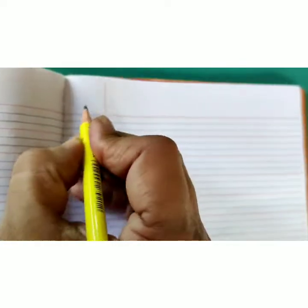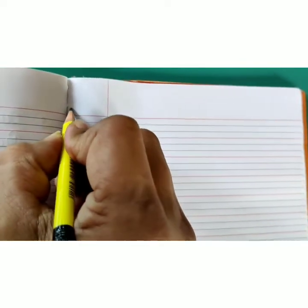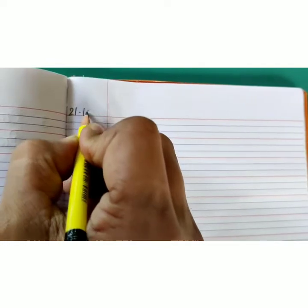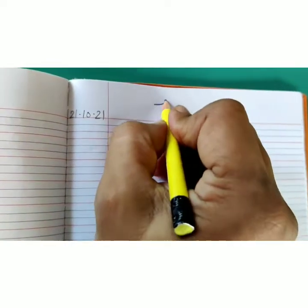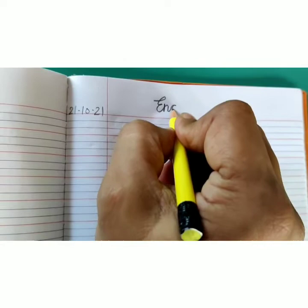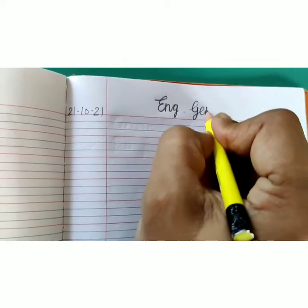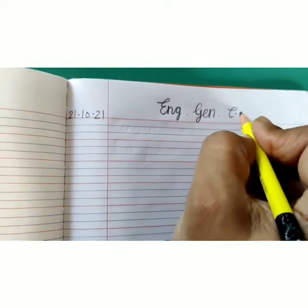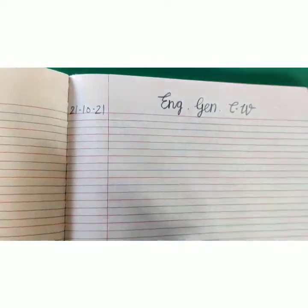Today we will write things in my bag. Open your notebook and write down today's date in the margin: 21-10-21, at the top right here. Capital E-N-G, English. G-E-N, General. Capital C.W., Classwork.